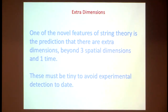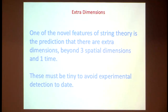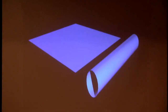One novel feature of string theory is the prediction of extra dimensions. We weren't thinking about extra dimensions — we have three spatial dimensions and one time. But string theory says it won't work well with just those dimensions. It turns out you need nine spatial dimensions and one time. We only see three spatial dimensions, so what do we do with the extra six?